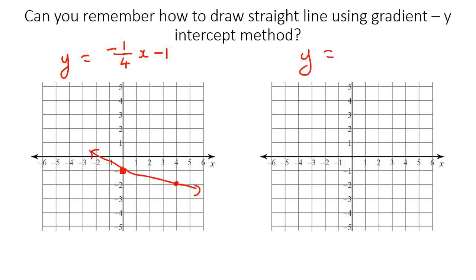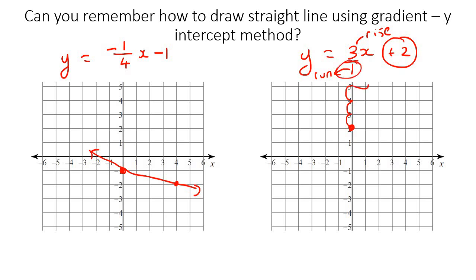Let's do one more, then we'll move on to absolute value. Let's make this a 3 over 1, because some students get confused when there's just a 3 — they think, where's the rise and where's the run? Remember, just say 3 over 1, because 3 over 1 is the same as 3. So 3 is your rise and 1 is your run. We start by putting the y-intercept at positive 2. Rise is 3, so we go 1, 2, 3. Run is 1, so we go 1 to the right, and then connect them.